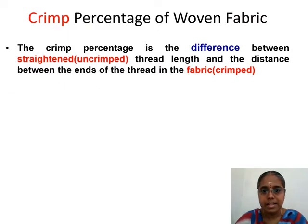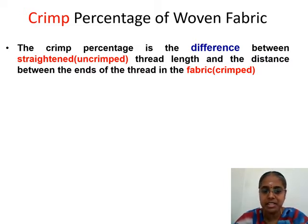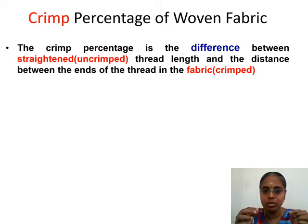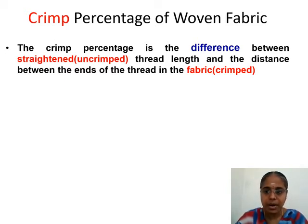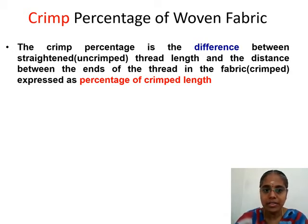Let us see what crimp is first, and then its calculations. Crimp is the difference between the straightened and the unstraightened length of yarn. The straightened length is obtained by removing the yarn from the fabric and straightening it — that is the uncrimped length, which is longer. In the fabric it is shorter — that is the crimped length. This difference is expressed as a percentage of the crimped length, that is, the length in the fabric — the smaller length is the divisor.